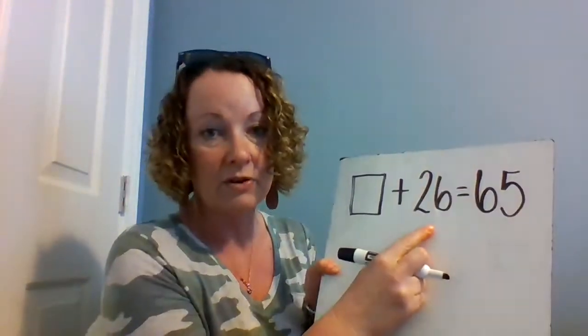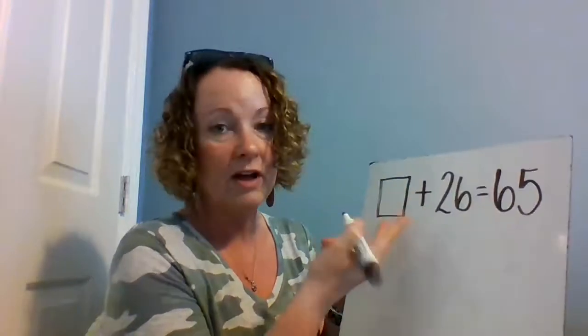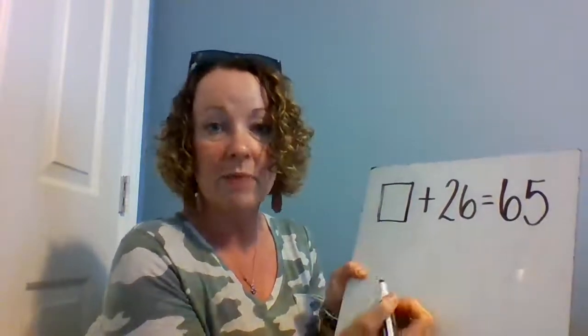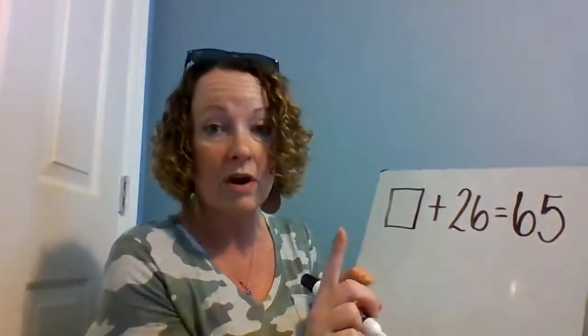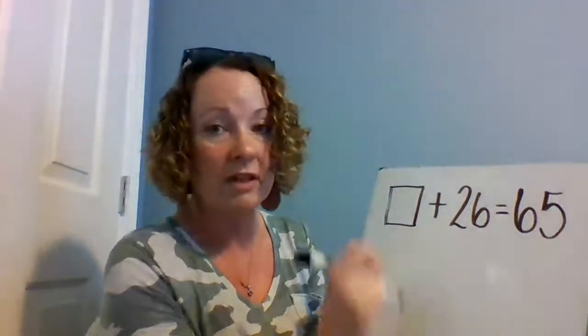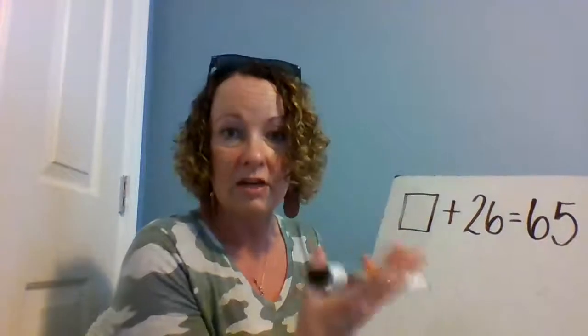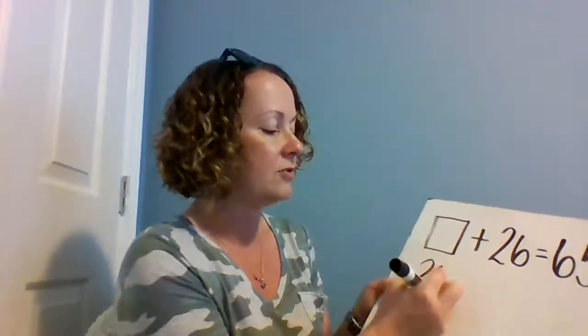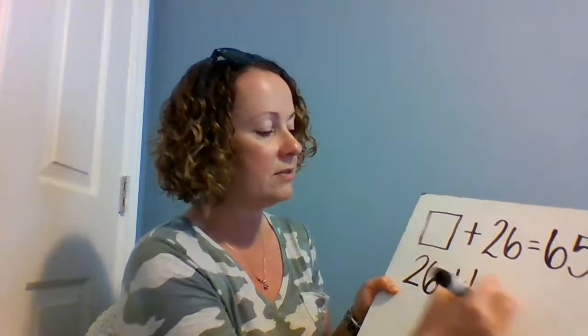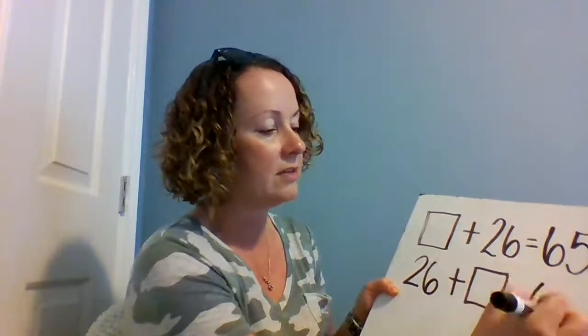Okay, I'm gonna put my known addend first and I'm gonna flip-flop my problem so that the box, the missing number, is in the middle. I like it that way. You can still work it exactly the same way leaving the problem like this. I just like mine to be in a certain order. So I'm gonna flip-flop. 26 plus box equals 65.